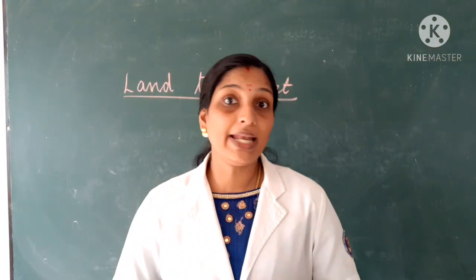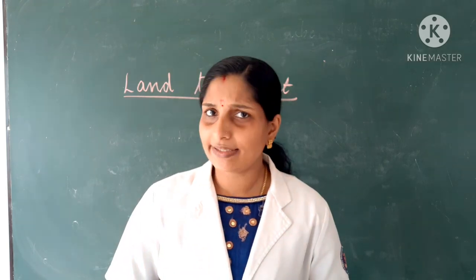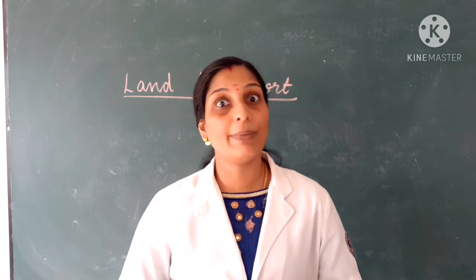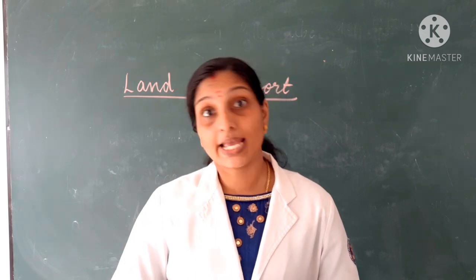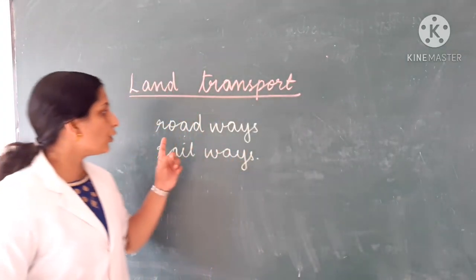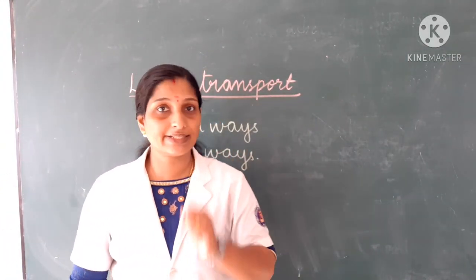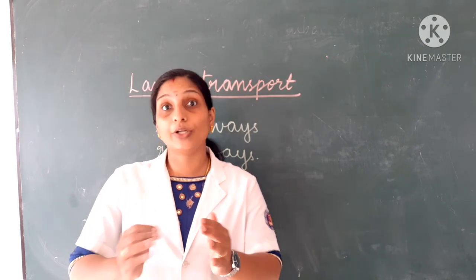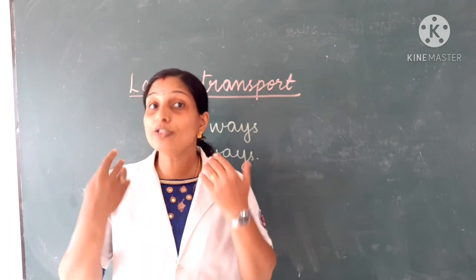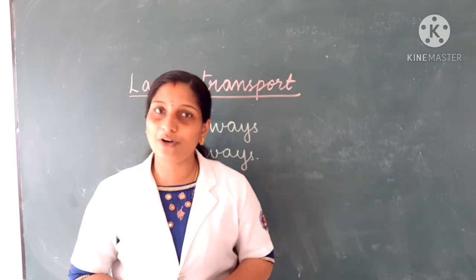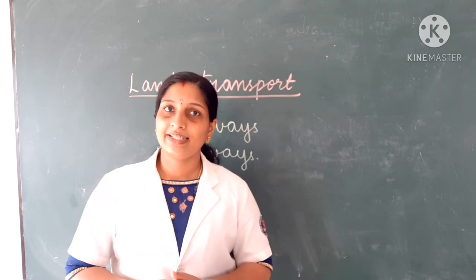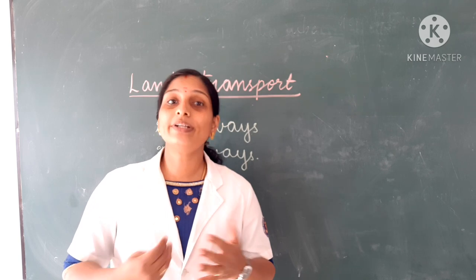First, we will discuss land transport. Land transport is the transport of people and goods by land, using roadways and railways. Traveling through a road is the easiest way to travel from one place to another, and it also enables door-to-door delivery of things. Bicycle, car, bus, and truck are some examples of means of road transport.